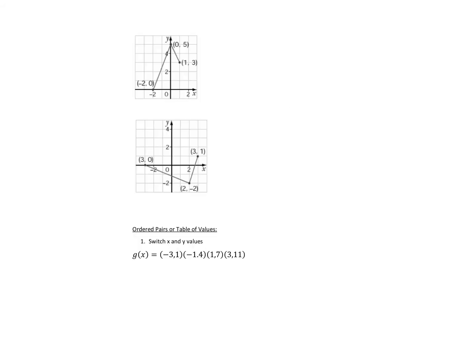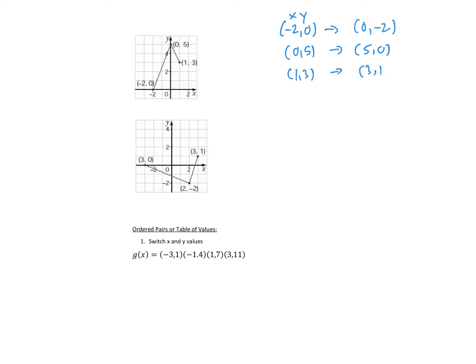For example, here we have a graph with points labeled as negative 2, 0; then 0, 5; and 1, 3. For negative 2, 0, the inverse would be 0, negative 2 — we switch the x and the y. For 0, 5, its inverse would be 5, 0. And for 1, 3, its inverse would be 3, 1.